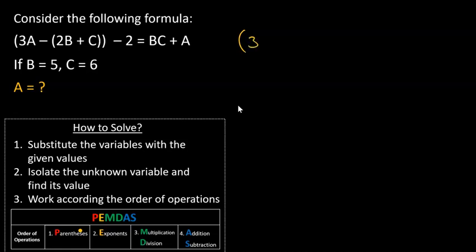So we have 3A minus 2 times 5 plus 6 minus 2 equals 5 times 6 plus A. Let's simplify that.